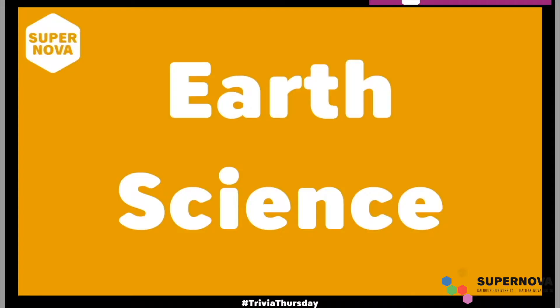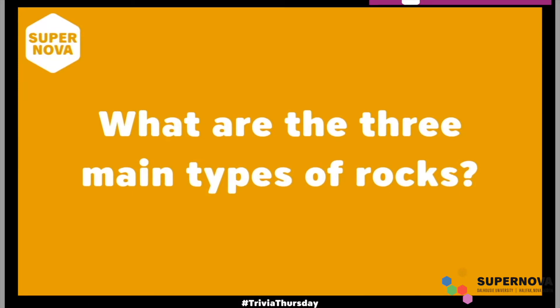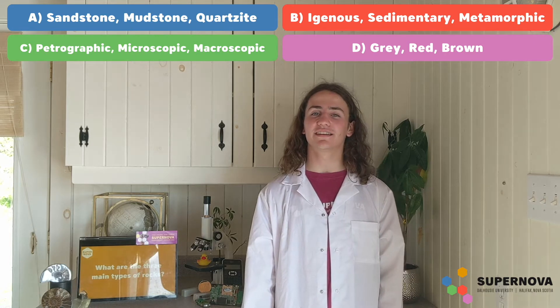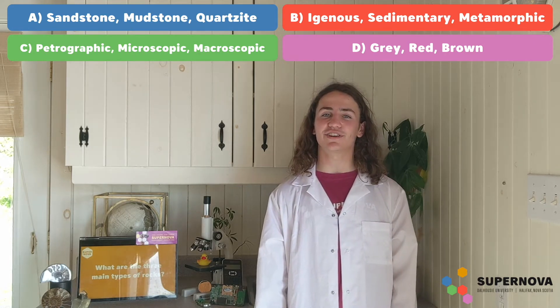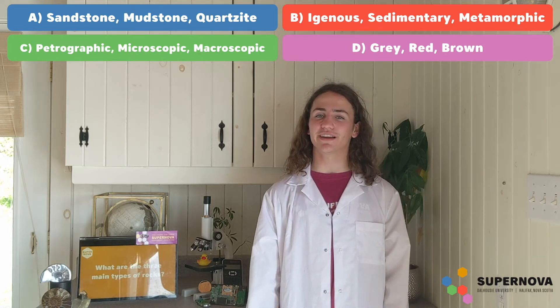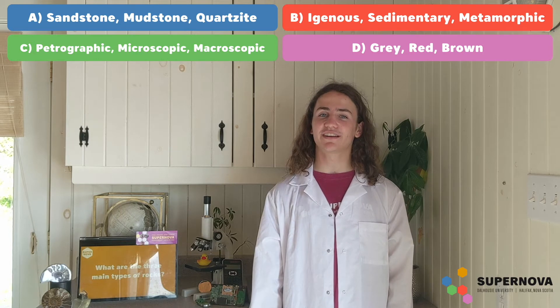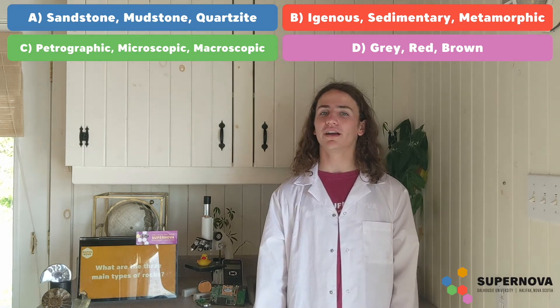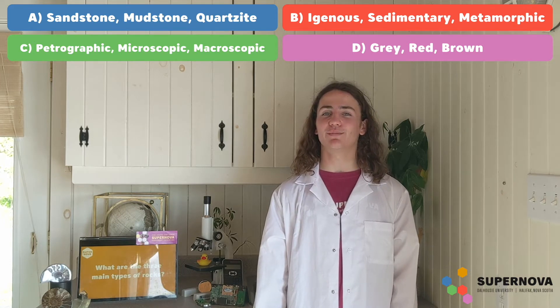Earth science is the branch of science that deals with the earth and the things that make it up, like rocks. Our earth science question says: what are the three main types of rocks? Are they sandstone, mudstone, and quartzite; igneous, sedimentary, and metamorphic; petrographic, microscopic, and macroscopic; or gray, red, and brown?